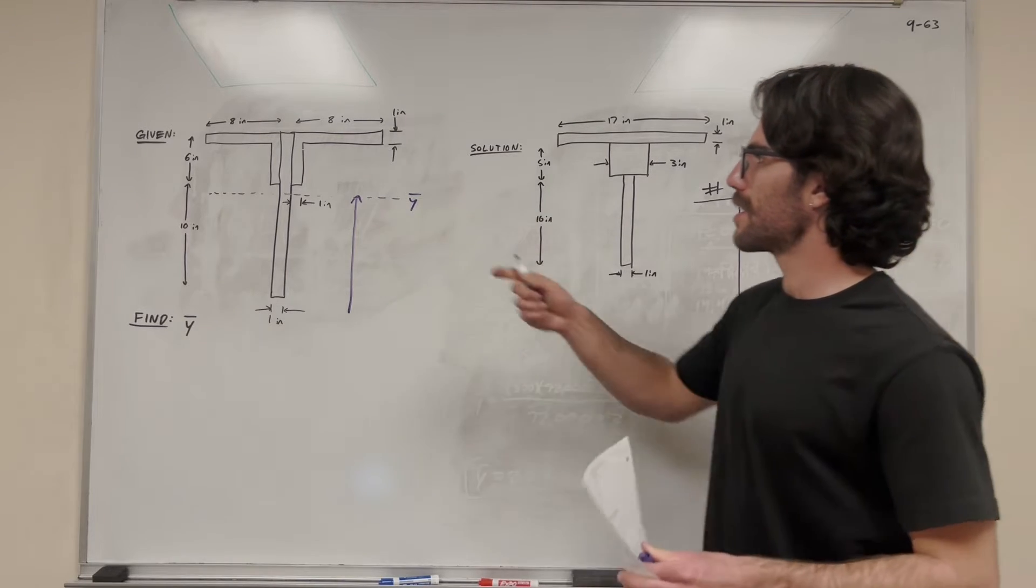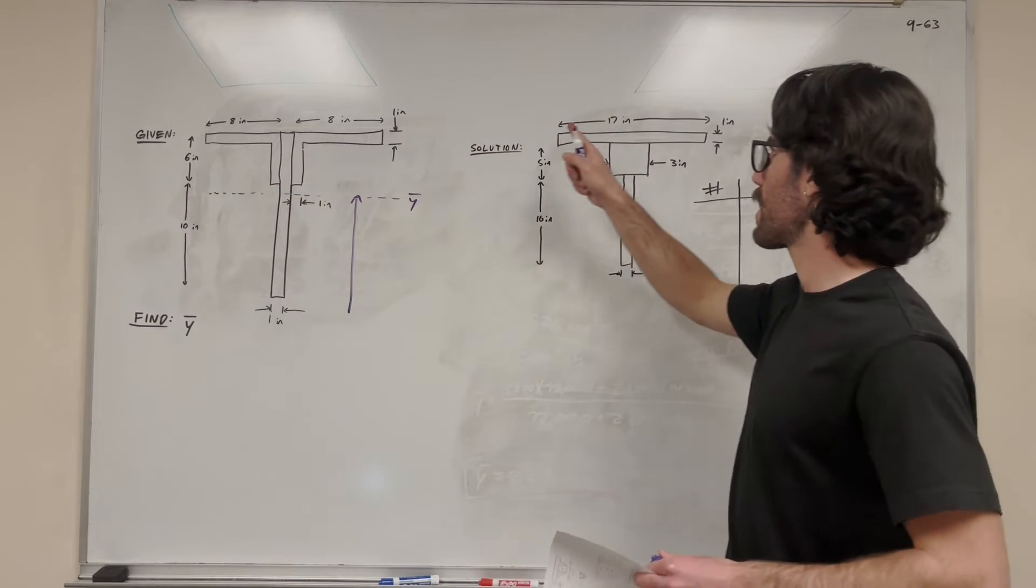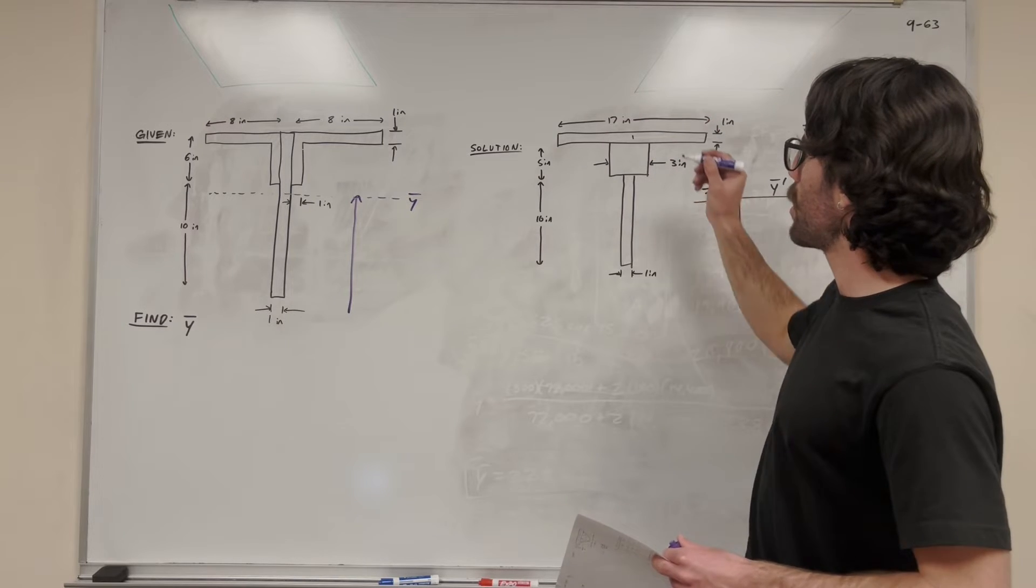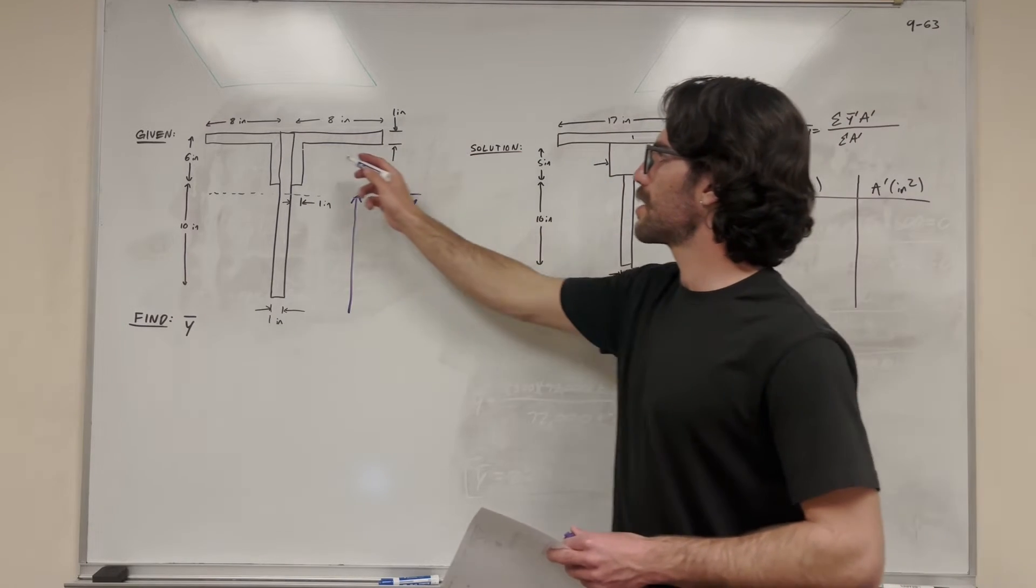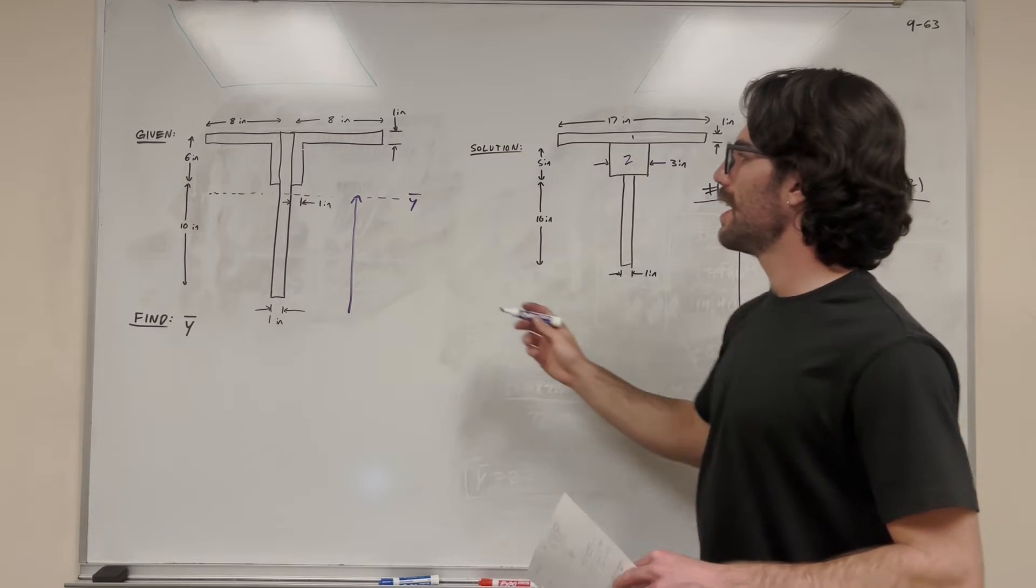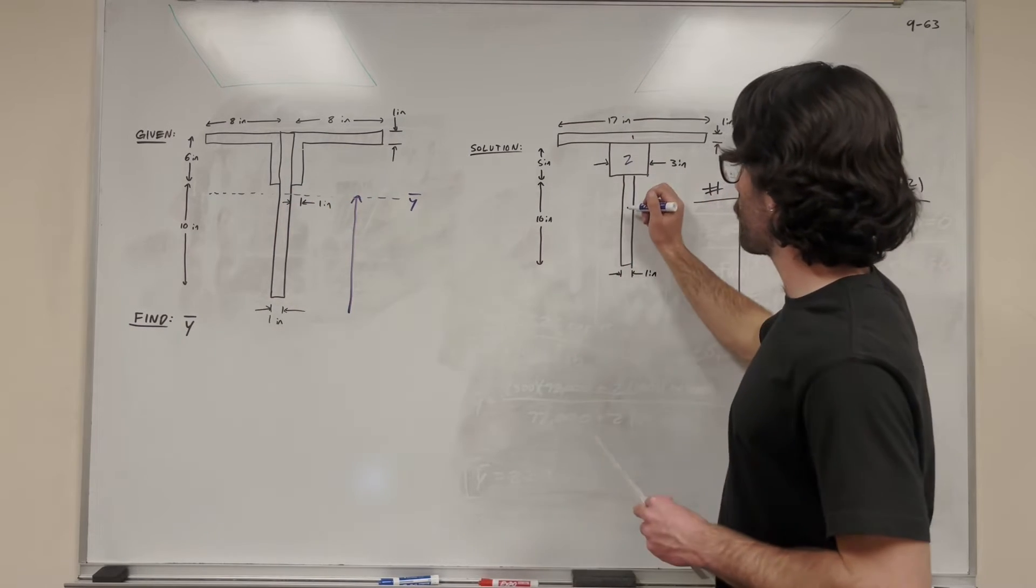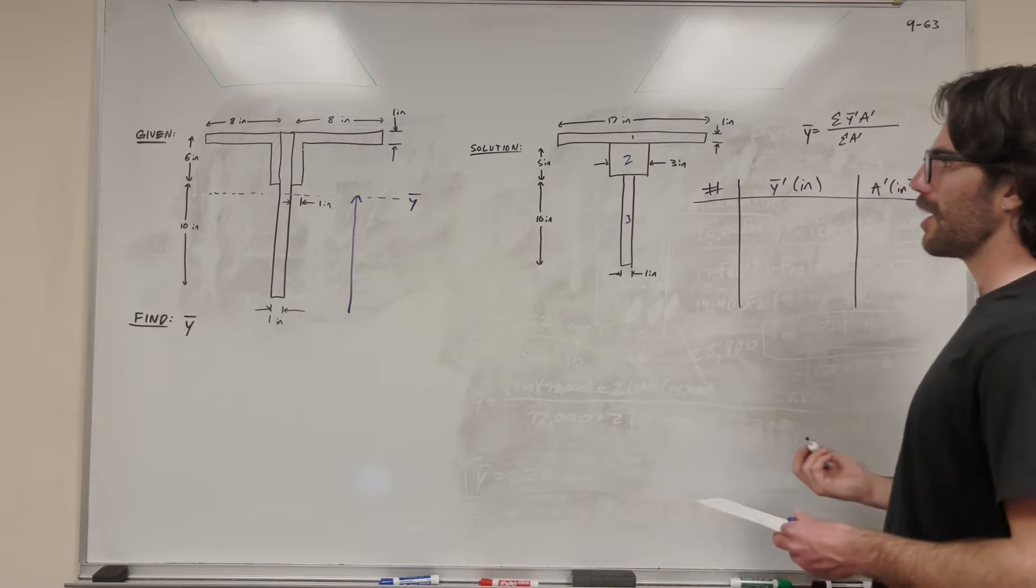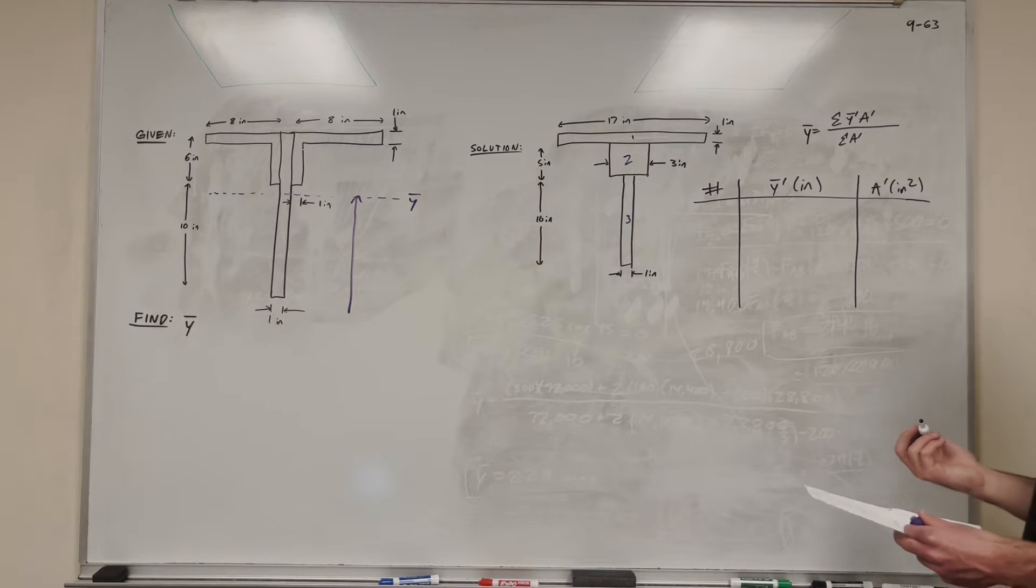So I combined this entire top row into one long rectangle of 17 inches. So let's call this shape number one. Then this rectangle here kind of just became its own rectangle called shape number two. And then finally this bottom rectangle became shape number three. So this is the simplest way I was able to break it up. You could play around breaking it up into different shapes if you'd like, but this is what I went ahead and did.